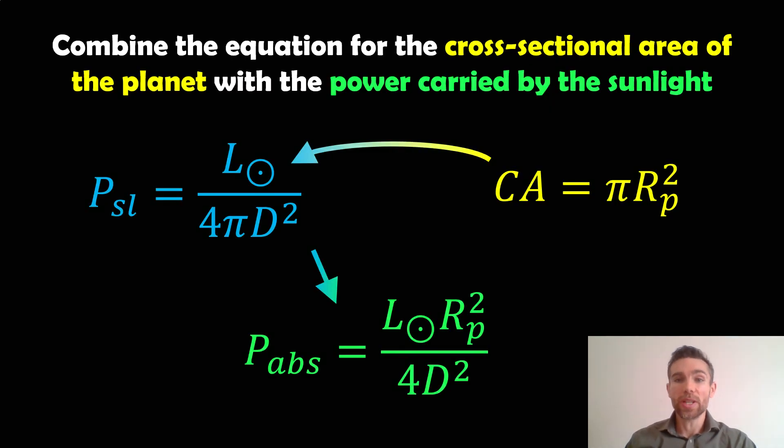Now we need to combine the equation for the cross-sectional area of our planet and the power carried by the sunlight, because that's going to give us the actual amount of power absorbed by the planet. If we put the cross-sectional area times the luminosity at the top, then our π gets cancelled. There's a π on the bottom, π on the top, they cancel. So we're left with the power absorbed by the planet.